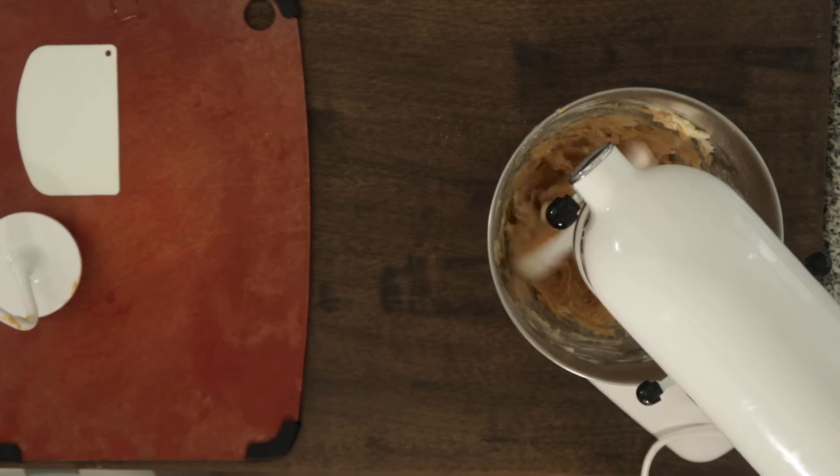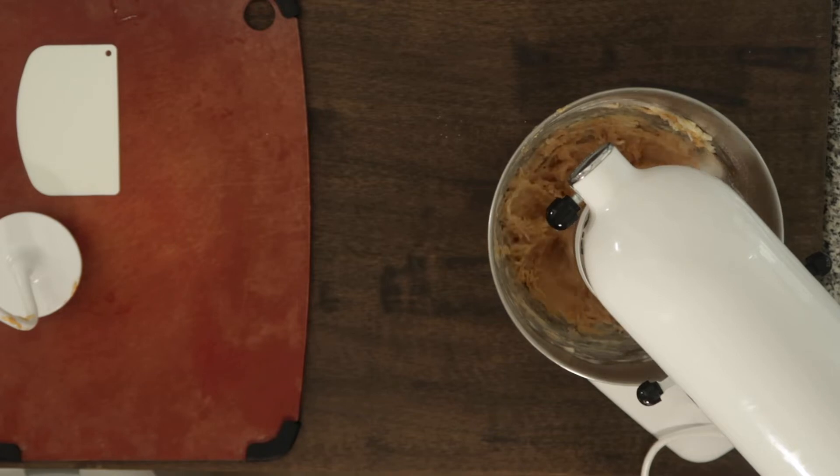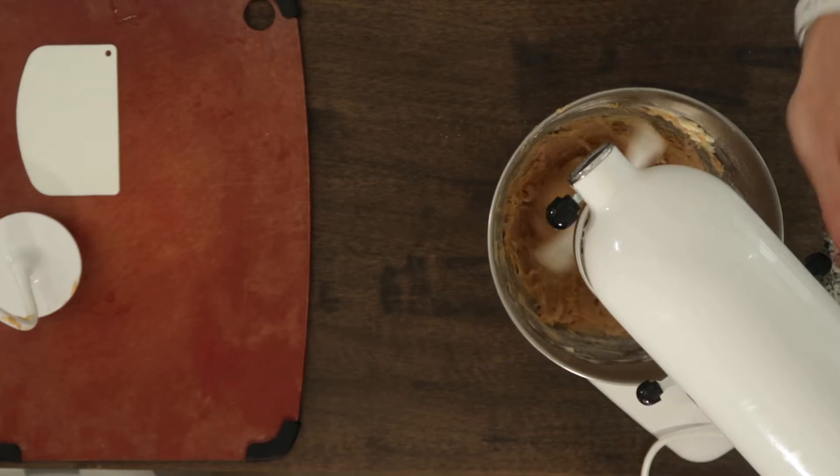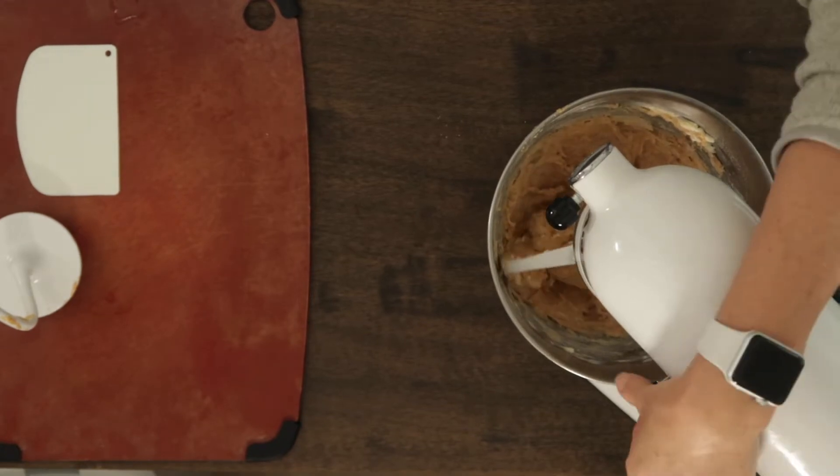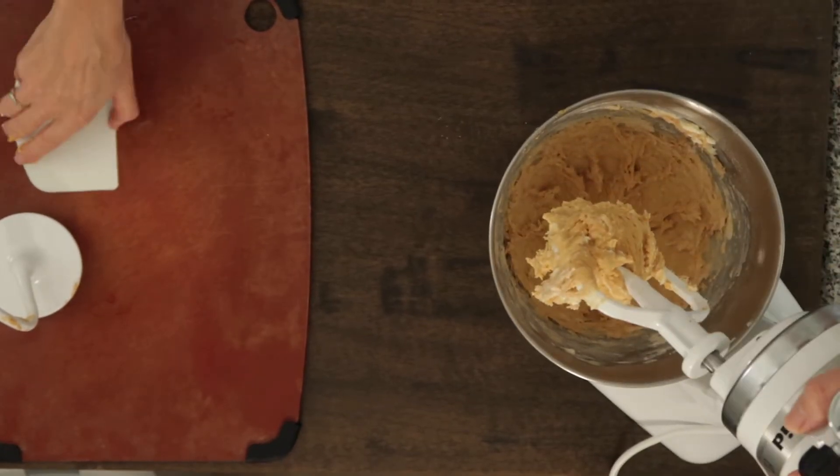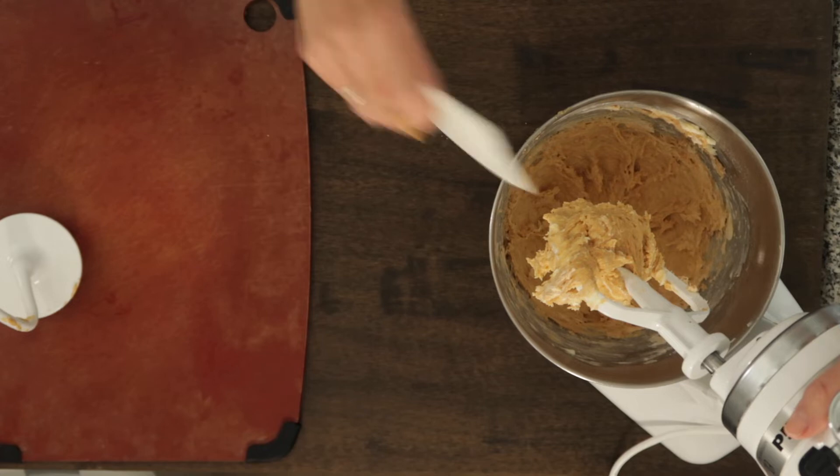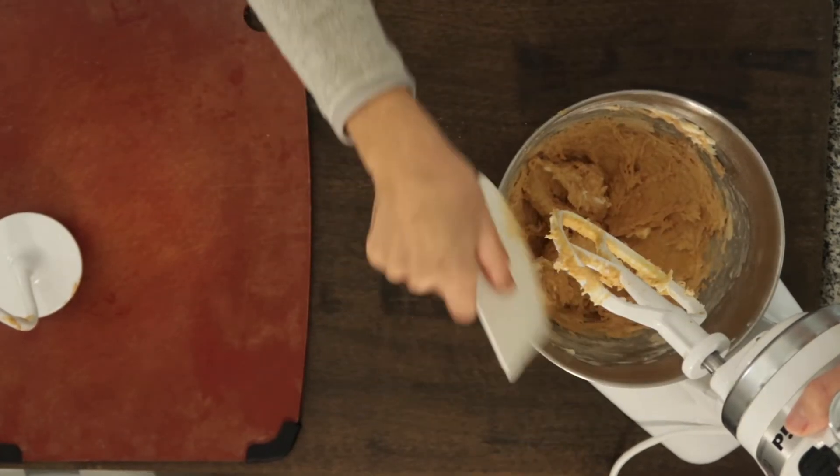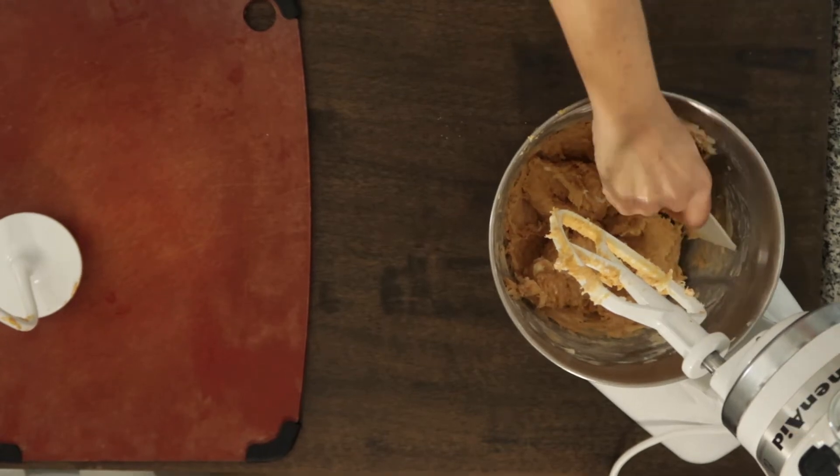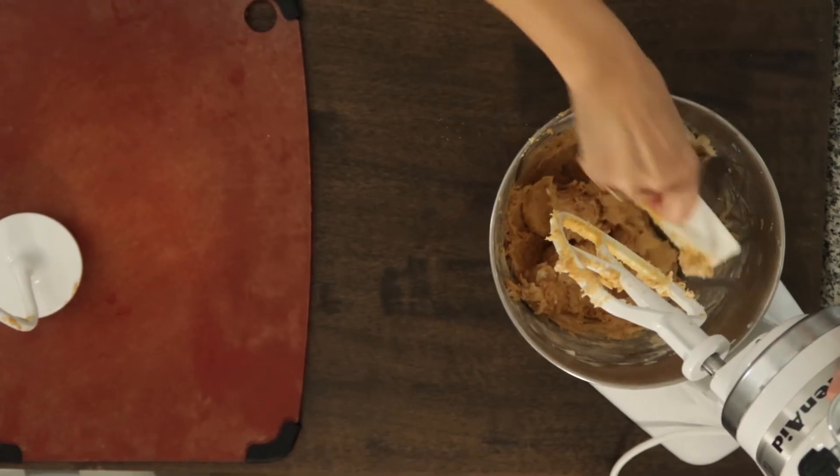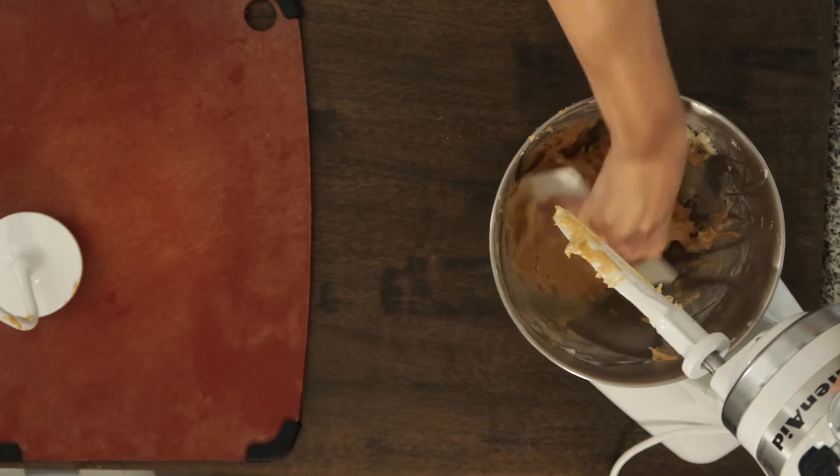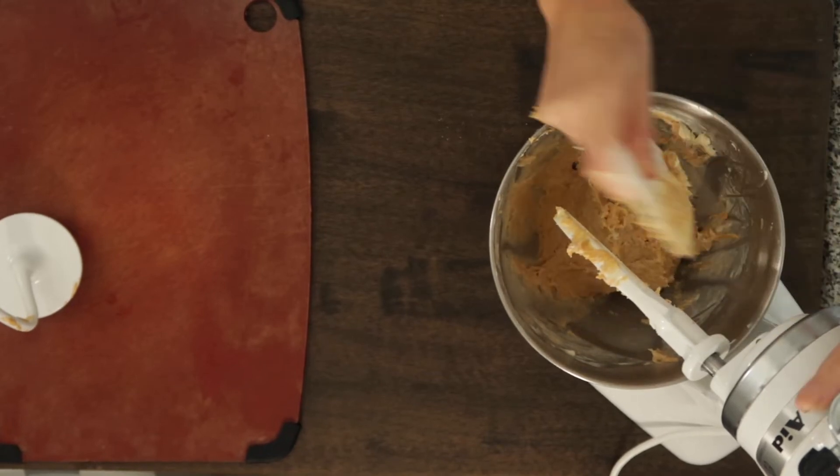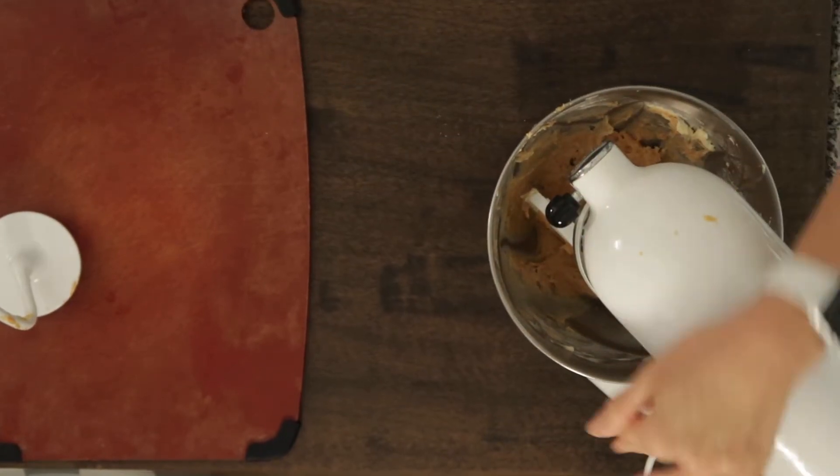If you see any butter up the side of the bowl, then scrape it down and also make sure to scrape down the paddle. A good tool to use to scrape down the paddle, well there's a couple. You can use the bowl scraper like I'm doing in the video. You can also use a small offset spatula. I have that on high authority. That's Martha Stewart's technique for scraping the paddle. But whatever works for you.